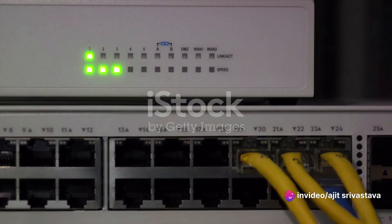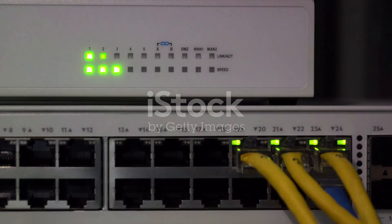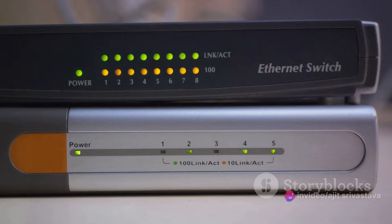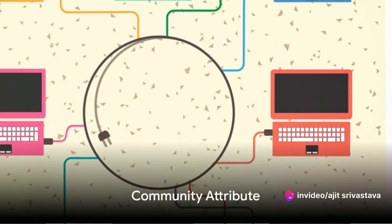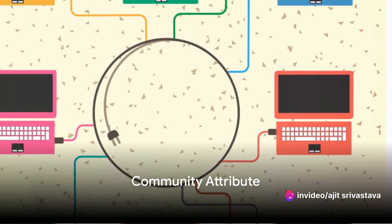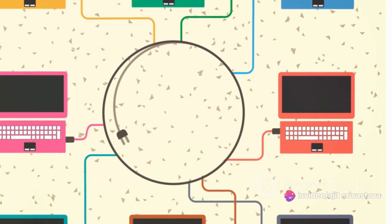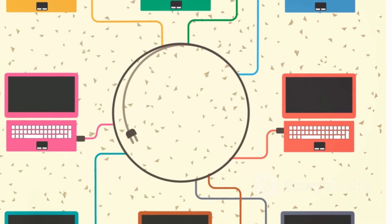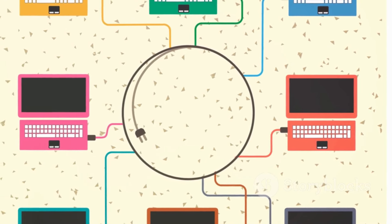The weight attribute is Cisco-specific. It's a value assigned by the router to prioritize certain routes over others — higher weight values are preferred over lower ones. Unlike other attributes, weight is not exchanged between routers.